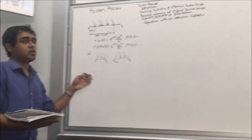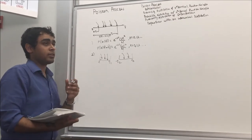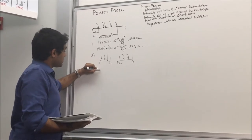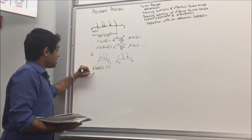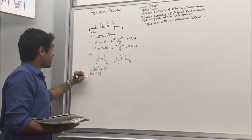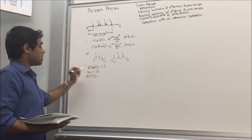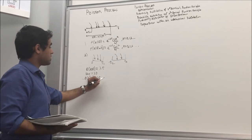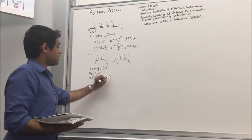We will use this independence property to find the autocorrelation of the Poisson process. First, we find the mean. The mean of the Poisson process is the parameter itself, so it is λt. The variance is also λt, and E[X²(t)] will be equal to λt plus λ²t².